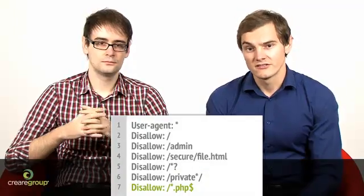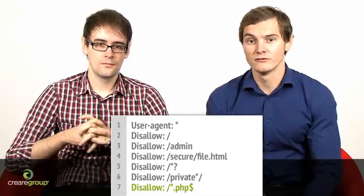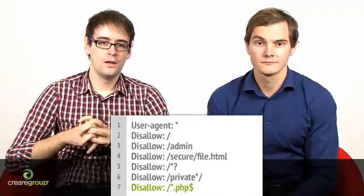The final pattern matching command is the ability to identify and restrict access to all files that end with a specific extension. On line 7 you'll see how this single short command will instruct the search engine bots and spiders not to crawl or cache any pages that contain the .php extension. After your initial forward slash, use the asterisk followed by a full stop and then the extension. To signify an extension instead of a string, you conclude the command with a dollar sign. The dollar tells the bots that the file to be restricted must end with this extension.